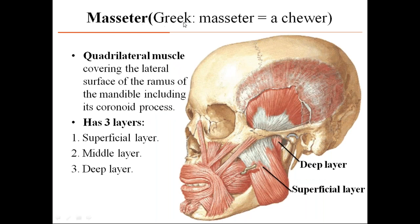The next muscle is the masseter. In Greek, masseter means 'a chewer.' It is a quadrilateral-shaped muscle covering the lateral surface of the ramus of the mandible. It consists of three layers: superficial, middle, and deep layer — the superficial layer is thick, and the deep layer is visible on the posterior aspect.